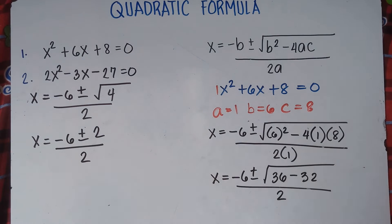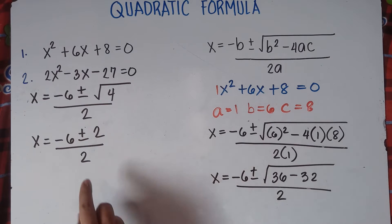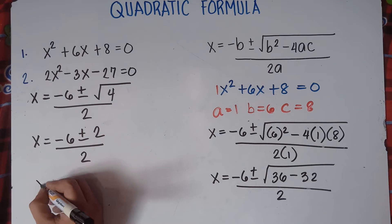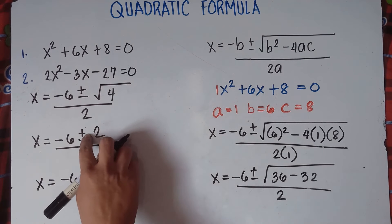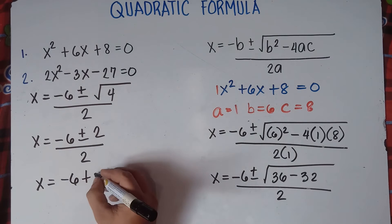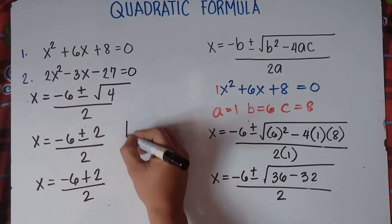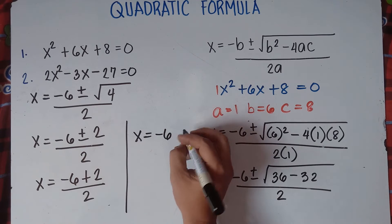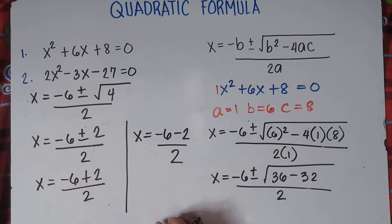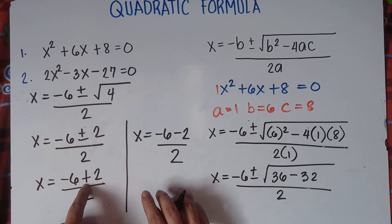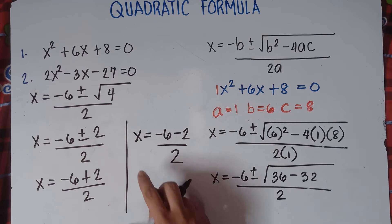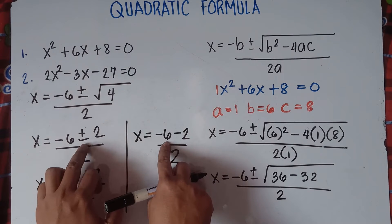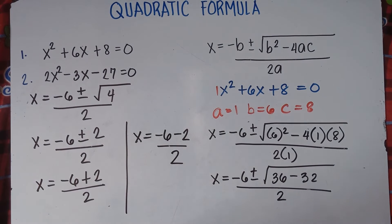Since we have plus or minus, we need to separate into two answers — two roots. So x = (−6+2)/2 for the first root, and x = (−6−2)/2 for the second root.